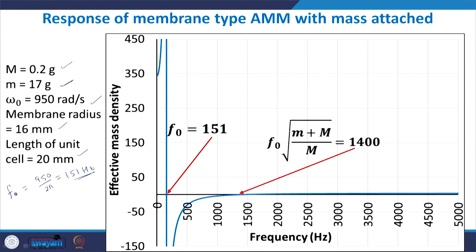From the graph, the anti-resonance point corresponds to approximately 151 Hz (matching f₀ = ω₀/2π), and the upper bound of the negative density region corresponds to approximately 1400 Hz — consistent with f₀·√((m+M)/m) = 151·√(17.2/0.2) ≈ 1400 Hz.